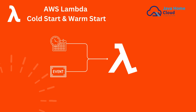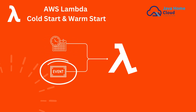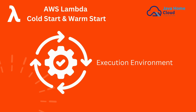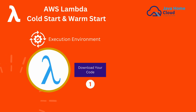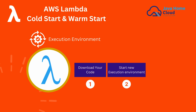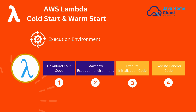When a trigger is received by a Lambda function — either through a schedule or an event — Lambda service has to prepare the execution environment. The following steps happen: Step 1, download the code. Step 2, start a new execution environment. Step 3, execute initialization. Step 4, execute the handler code, which is where the core logic of the Lambda function is kept.